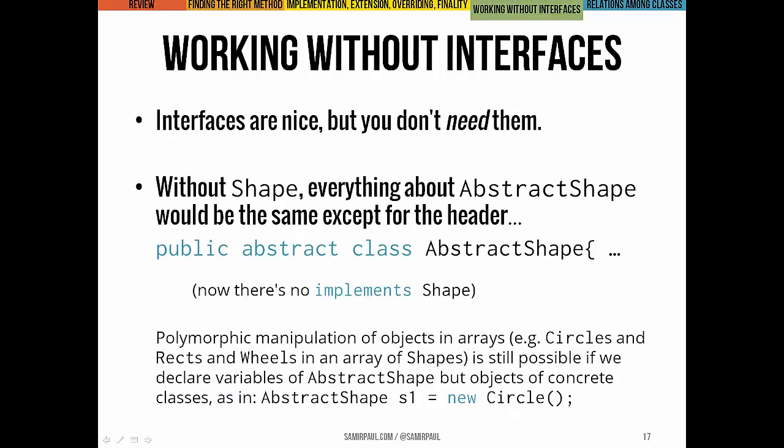Moving on: interfaces are useful and a powerful way to organize code, but they're not strictly necessary. Without the shape interface, implementing AbstractShape looks largely the same except for the header — just no 'implements Shape.' You could declare abstract shape variables and associate circles, rects, or wheels with them, and still do polymorphic manipulation of those objects in an array, but typed as AbstractShape rather than Shape.